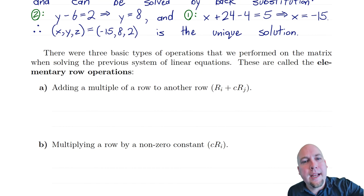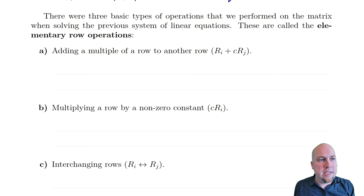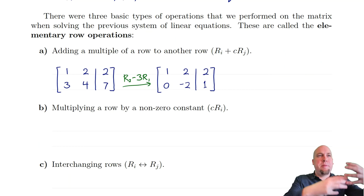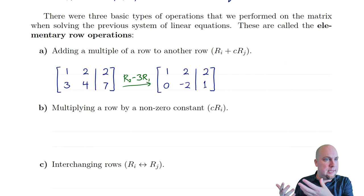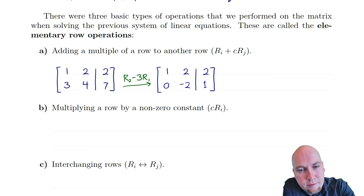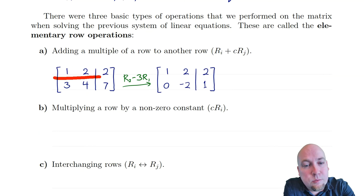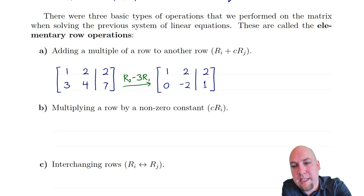The nice thing about this method is there are only ever three types of row operations you need to do to solve a linear system. The most common type is adding a multiple of one row to a different row. We use this operation to zero out particular entries in the matrix — for example, doing row 2 minus 3 times row 1 to get a zero in the bottom-left entry and make the matrix more upper triangular. This is called an elementary row operation.